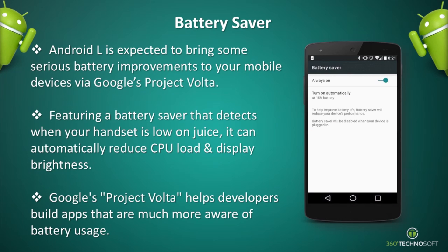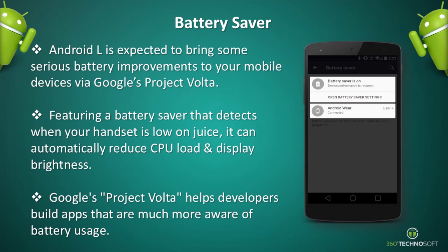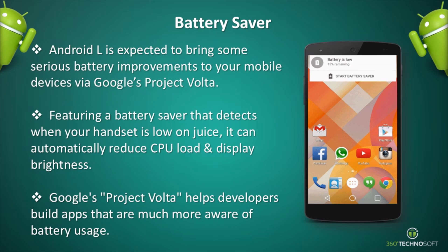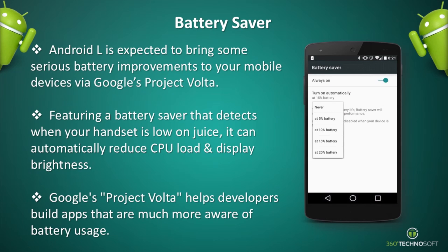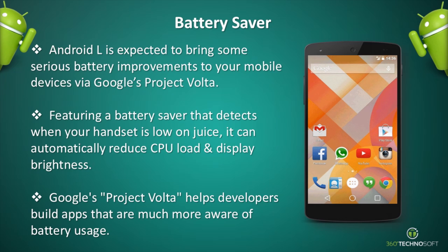Android L is expected to bring some serious battery improvements to your mobile devices via Google's Project Volta. Featuring a built-in battery saver that detects when your handset is low on juice, the app can automatically reduce CPU load and display brightness. Google's Project Volta also helps developers build apps that are much more aware of battery usage.